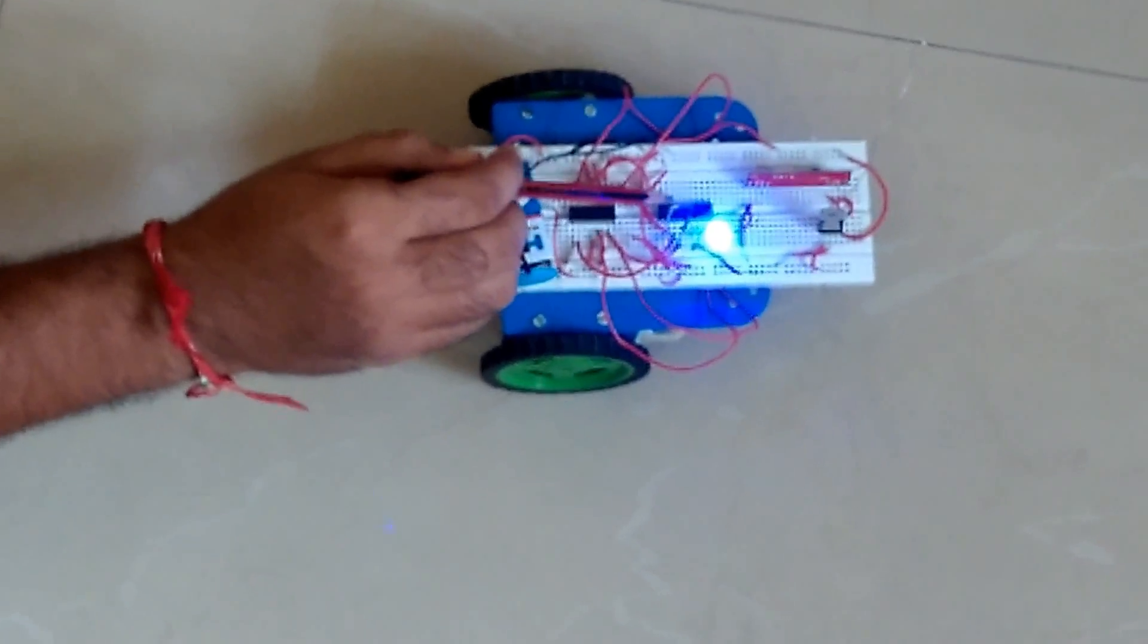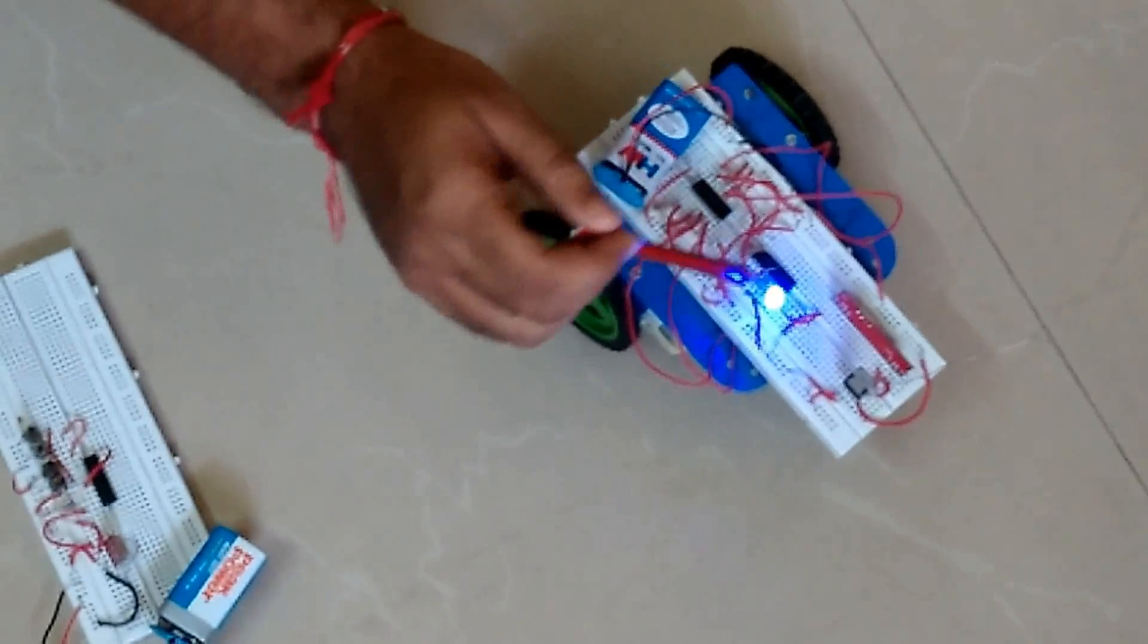You have to keep this address bit the same so that the address matches. Then we have ground and all this stuff, we have this first pin as the VCC.